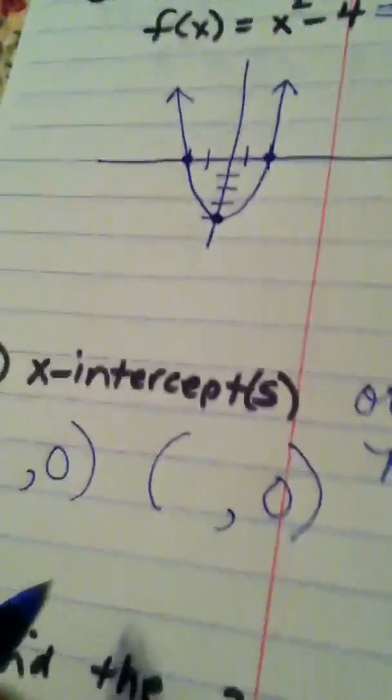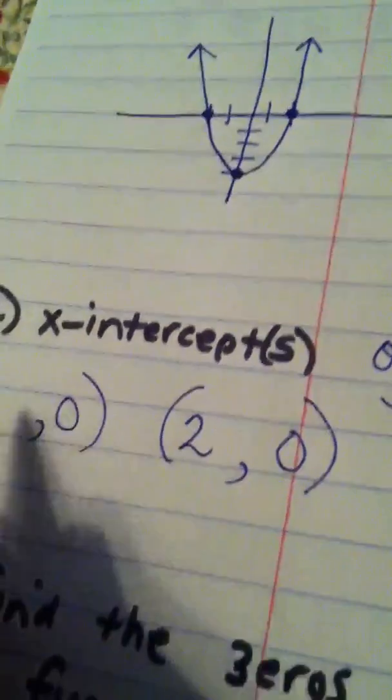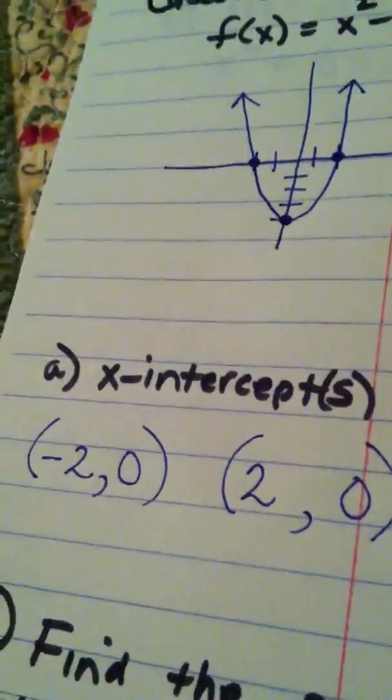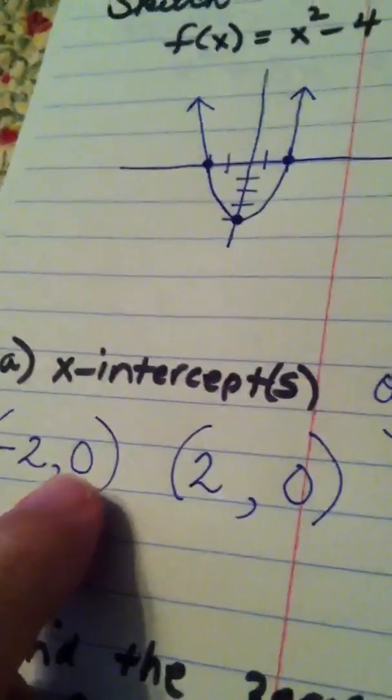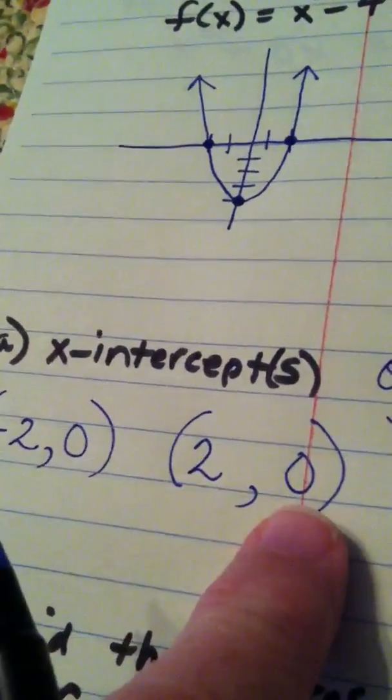the front two numbers are 2 as well as negative 2. So, I have two x-intercepts here, namely the ordered pair negative 2, 0 and the ordered pair positive 2, 0.